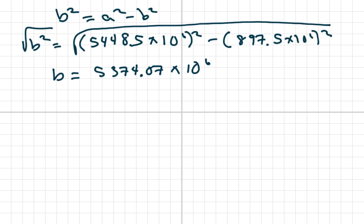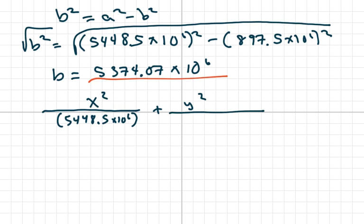So the equation of the orbit of Pluto is X squared over your A squared, which is 5,448.5 times 10 to the sixth, plus Y squared over your B, which we just found here, which is 5,374.07 times 10 to the sixth squared. And equals 1. So there it is.